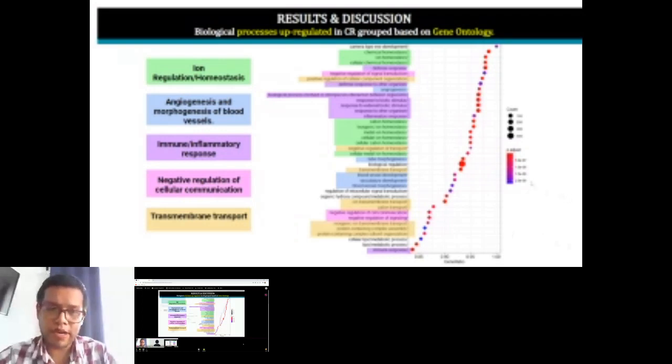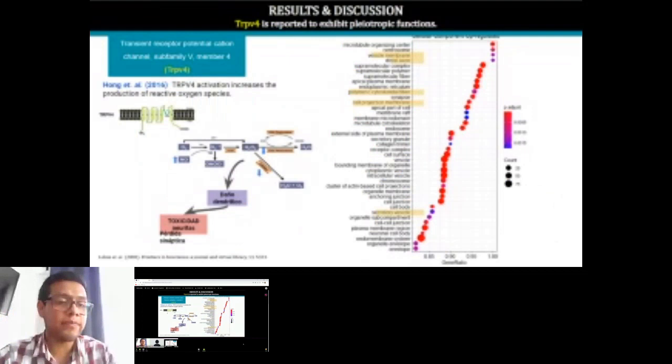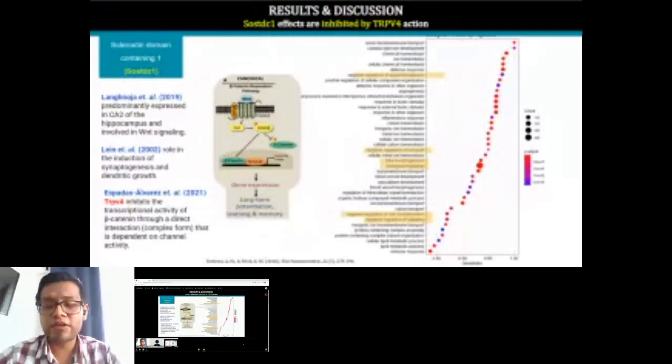Regarding cellular communication, we found different genes that are over-regulated. One of them is TRPV4. This gene has been reported to increase the production of reactive oxygen species that could damage the membranes and induce toxicity by drastic changes in ionic homeostasis.